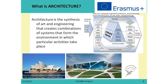Another question: what is architecture? If we look at the pictures here, we can think of architecture as a synthesis of art and engineering that creates combinations of systems forming the environment in which particular activities take place. When we speak about architecture from the point of view of buildings, this is something very well visible. But when we speak about the architecture of internal activities at different enterprises, it is not so easy to visualize, and for this we put in a specific effort — which is building an enterprise architecture.